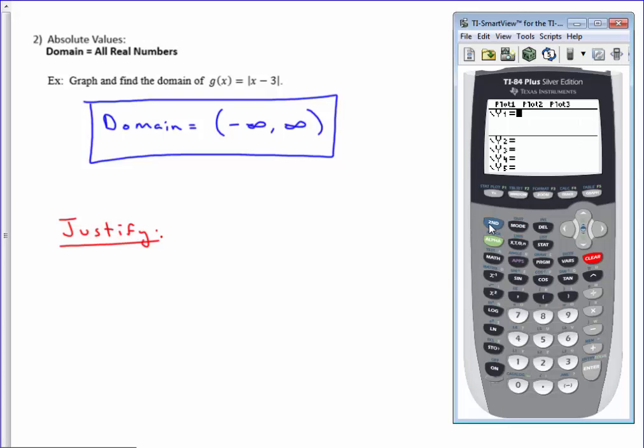The absolute values are going to be obtained by pressing second and then zero, which gets to catalog. And the very first thing in the catalog is abs and then a parenthesis. Just press enter there.